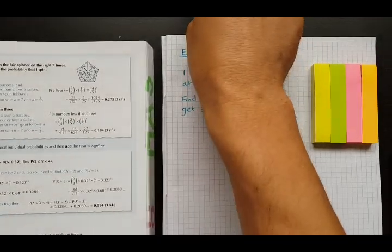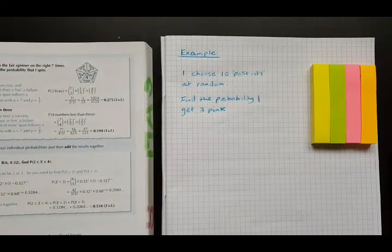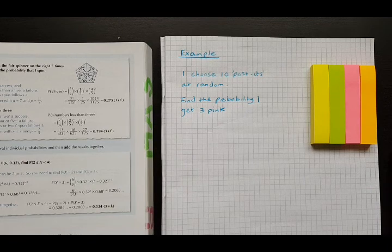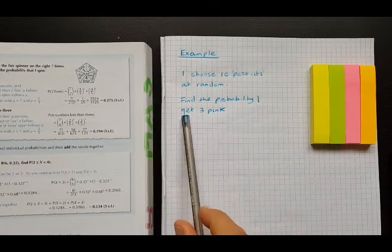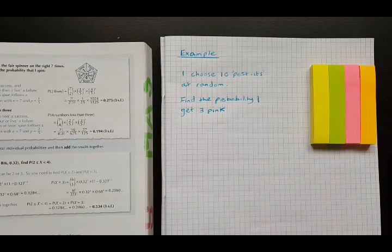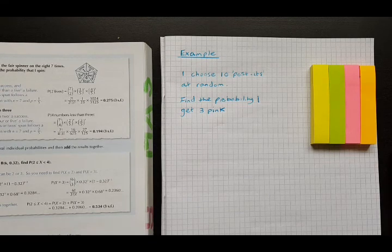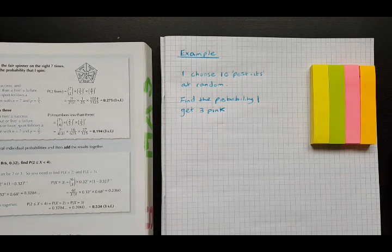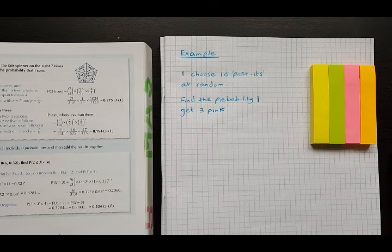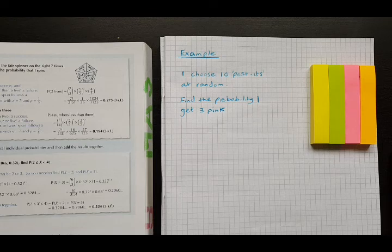So this is a quick recap on using the binomial probability function to calculate probabilities. I've just written down a simple example here. For example, I'm going to pick from these four post-it notes at random, completely at random. I'm just going to take 10 of them, and of course I could end up with any arrangement of colors. It says here find the probability that I get three pink. This is exactly the type of problem we can work out using the binomial probability function.